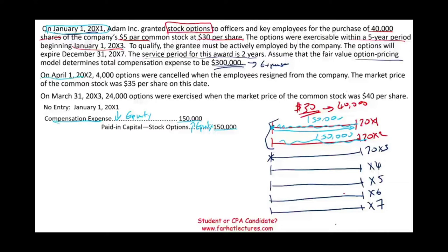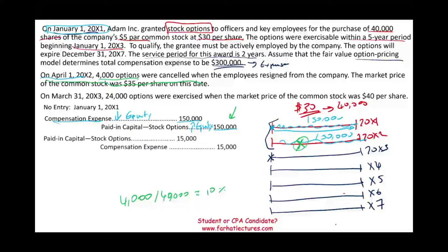On April 1st of 20x2, 4,000 options were canceled when employees resigned from the company. Since they resigned, they can no longer exercise their options. The 4,000 canceled options represent 10% of the 40,000 total options. Therefore, we reverse 10% of $150,000, which is $15,000 of compensation expense for those canceled options.